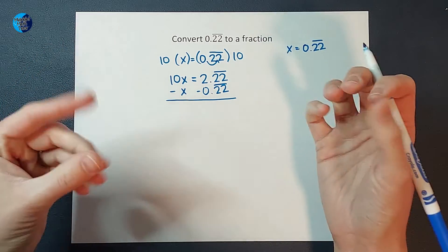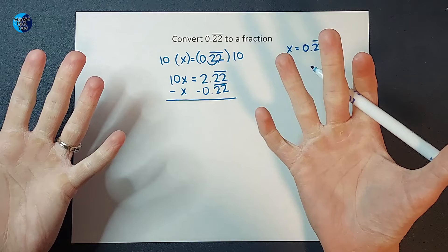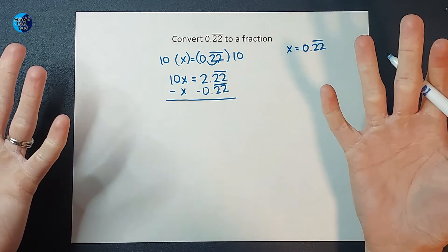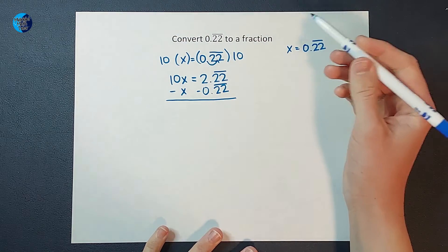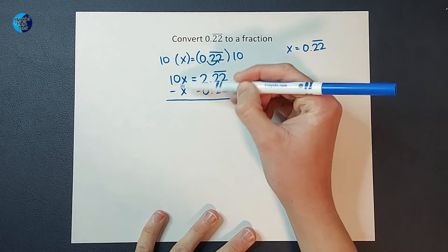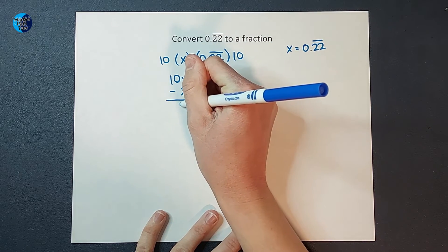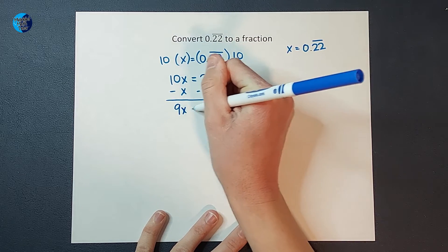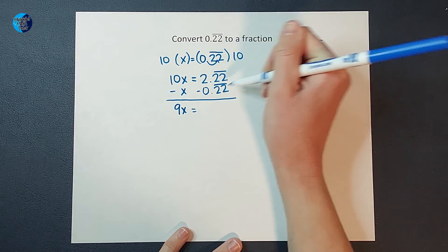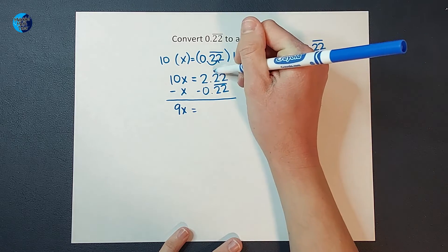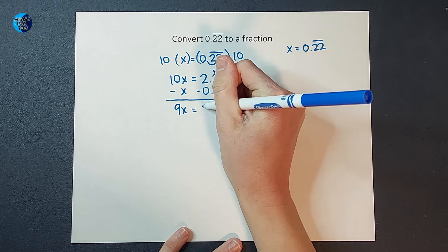It would kind of be like saying, I'm going to subtract a foot from this side and 12 inches from this side. It's the same thing, just a different way of saying it. So that the units line up. So when I do that, let's see what magic happens. On this side, I have 10x minus x, which would leave me with 9x, equals, when I have 2.22 repeating minus 0.22 repeating, well, the 2s repeating go away, and I'm just left with 2 on this side.